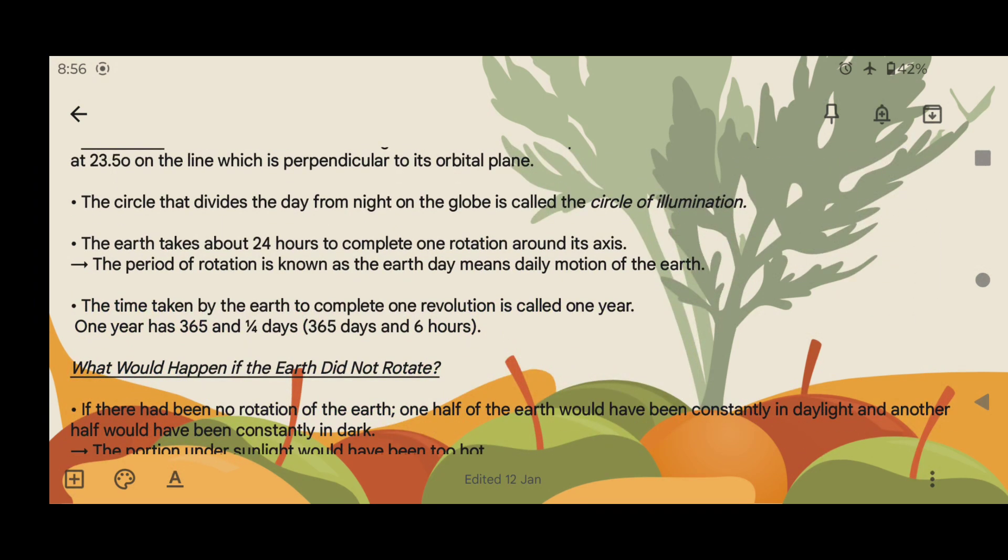The Earth takes about 24 hours to complete one rotation around its axis. The period of rotation is known as the Earth Day, meaning daily motion of the Earth.